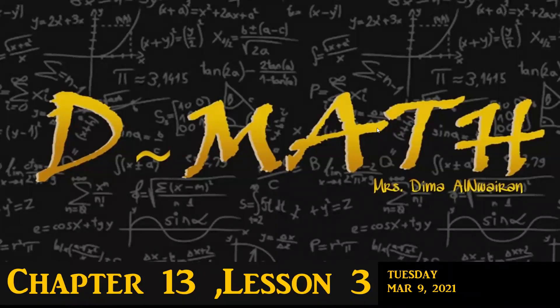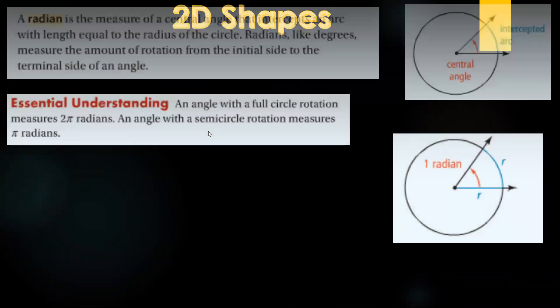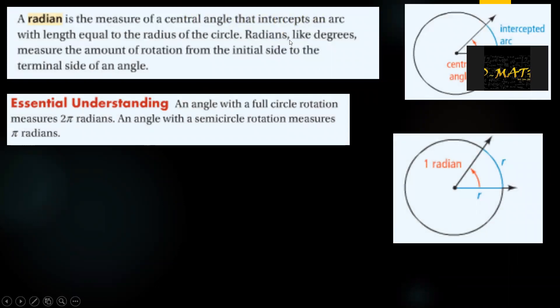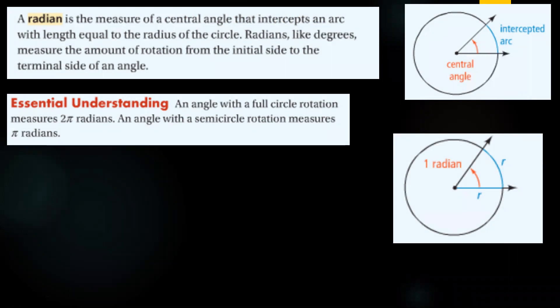Good afternoon. Let's revise what we said yesterday about radian measure. A radian is a unit for measuring rotation — I can use degrees or radians. For squares and triangles I use degrees, but for circles I can use both degrees and radians. To convert from degrees to radians, multiply by π/180; to convert from radians to degrees, multiply by 180/π.